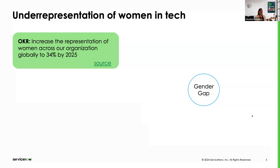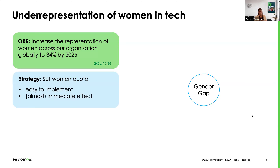You might be aware that women are underrepresented in tech. It is actually one of ServiceNow's goals for 2025 to increase the representation of women across the organization to 34%. To reduce this gender gap, there are many strategies possible. One of them would be to set a women quota, which is quite easy to implement — you just decide that from now on, half of the new positions must be filled by women. It's easy to implement, and you will see the effect quite fast; in a few months, you will see your gender gap reduced.